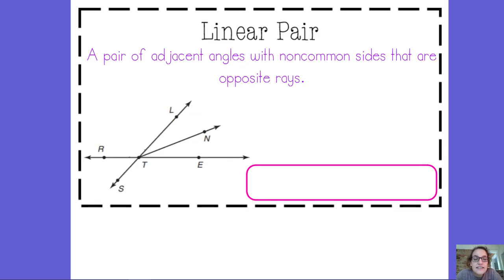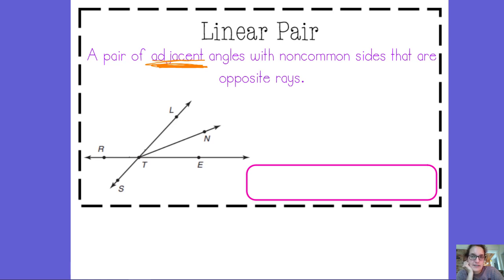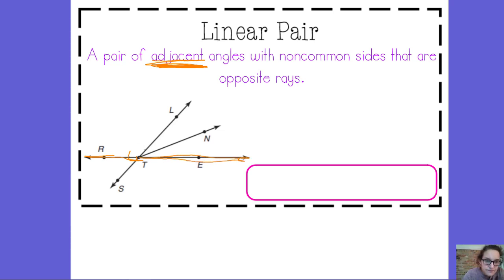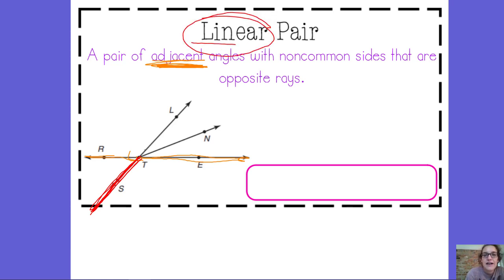A linear pair is two adjacent angles — so a pair of adjacent angles. Keyword: they have to be adjacent. They must be adjacent in order to be a linear pair, with non-common sides that are opposite rays. So ray TR and ray TE are opposite rays, and ray TS would be the common side for these two angles. Their non-common sides are opposite rays, so they make a straight line. Basically, when you're looking for a linear pair, you're looking for a line.